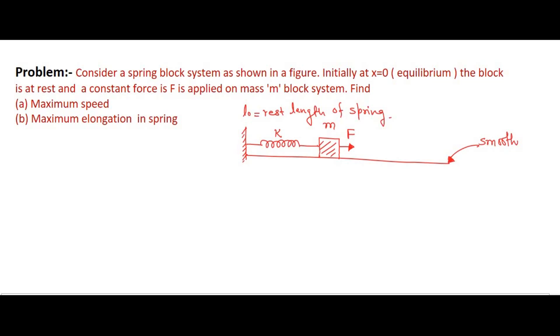In this video we are going to solve one more problem on Newton's laws. The problem is: consider a spring-block system as shown in a figure. Initially at x = 0, that is the equilibrium position, the block is at rest — its initial velocity is zero — and a constant force F is applied to the mass m block system. Find the maximum speed of the block and the maximum elongation in the spring.